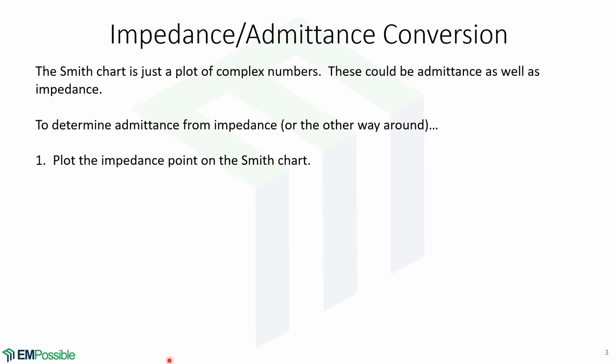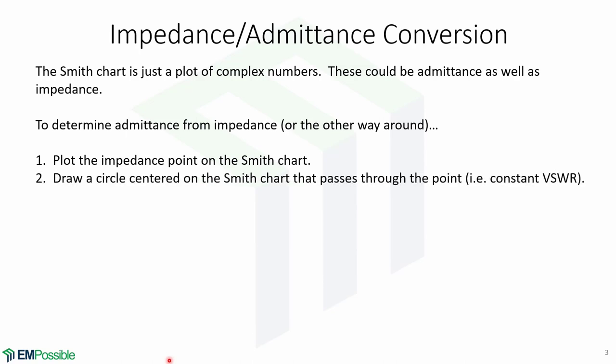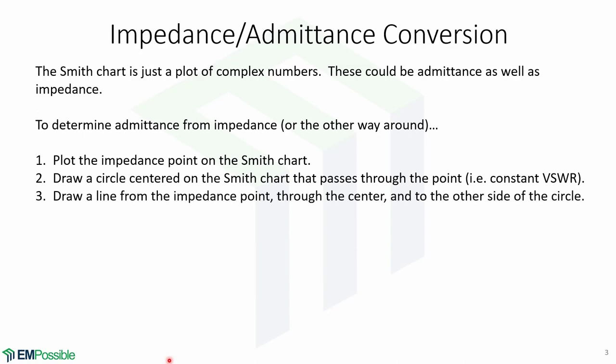The first step is to plot the impedance point on the Smith chart. The second step is to draw a circle centered on the Smith chart that passes through the point — these are called constant VSWR circles. Third, we draw a line from the impedance point passing through the center and to the other side of the circle. Finally, the intersection at the other side is the admittance.